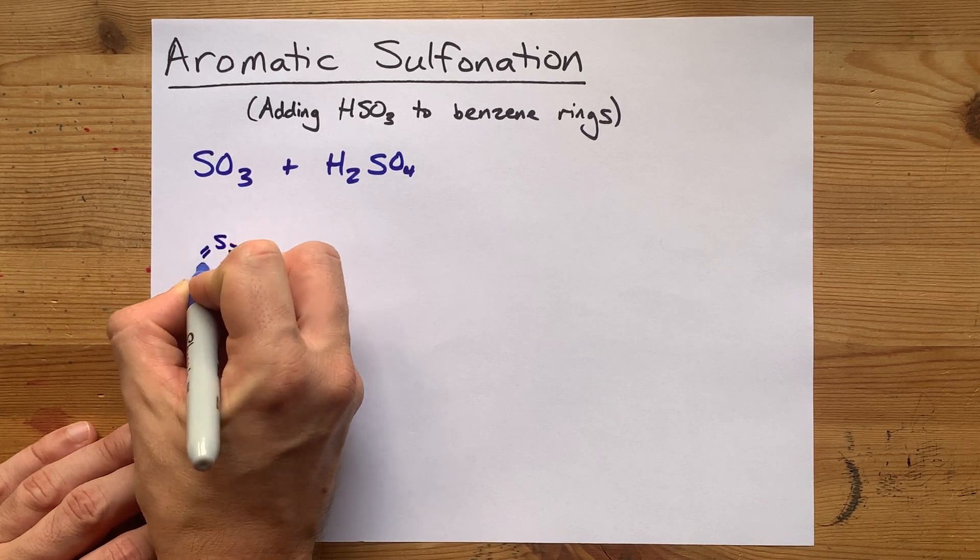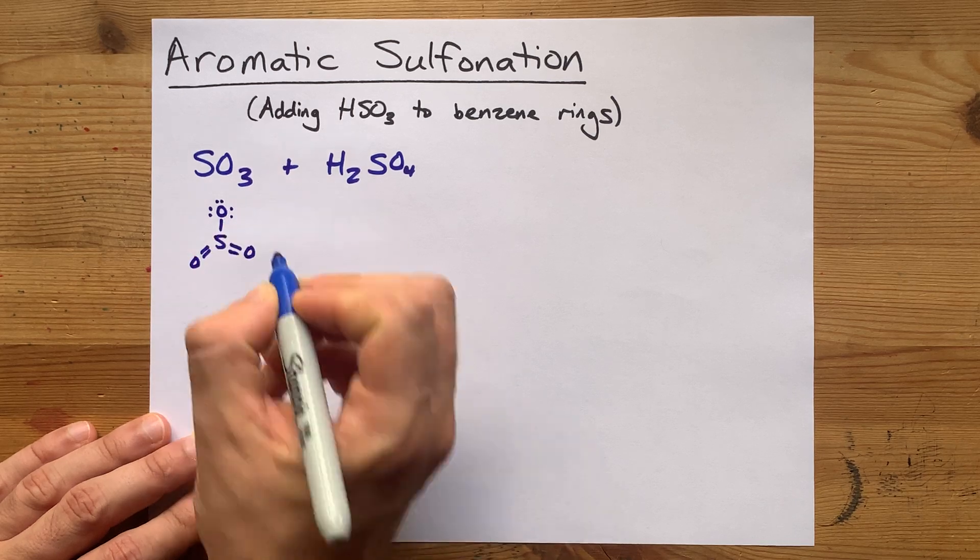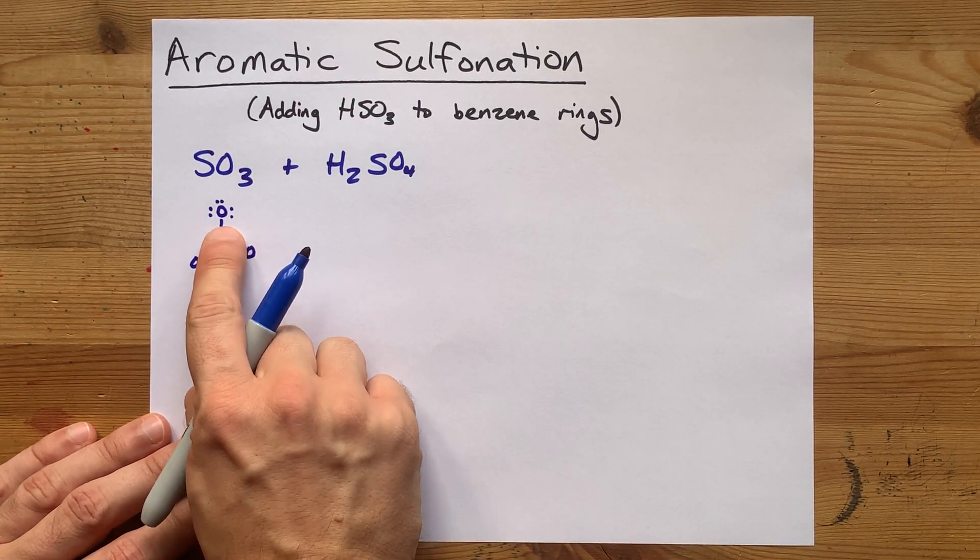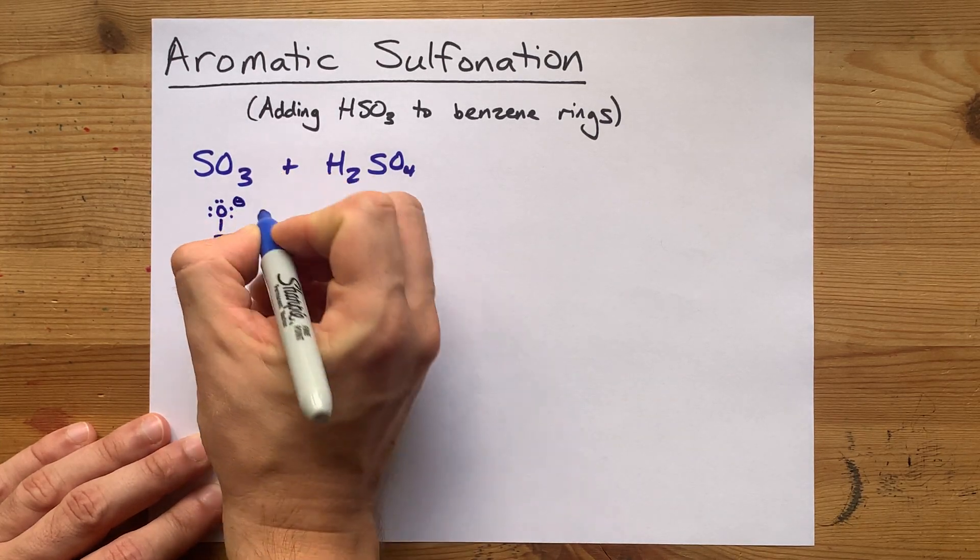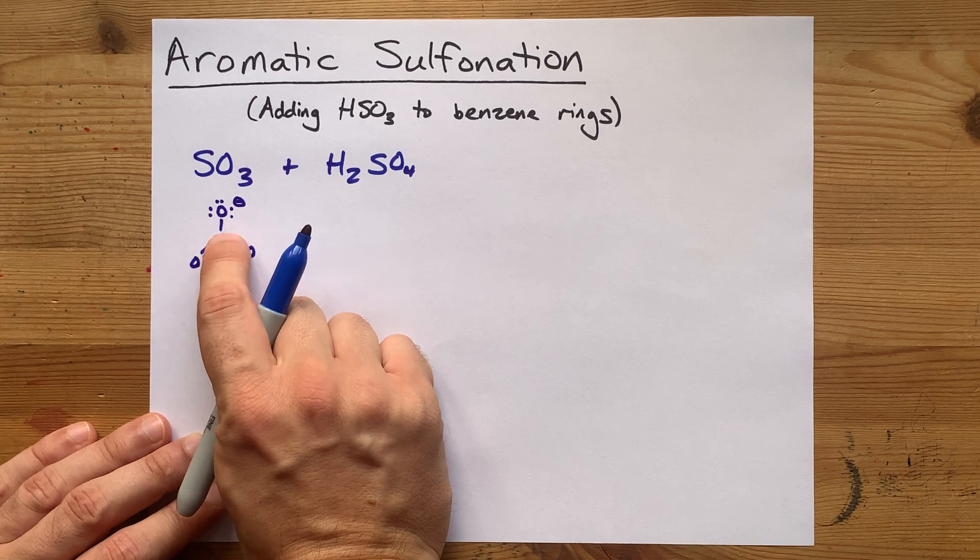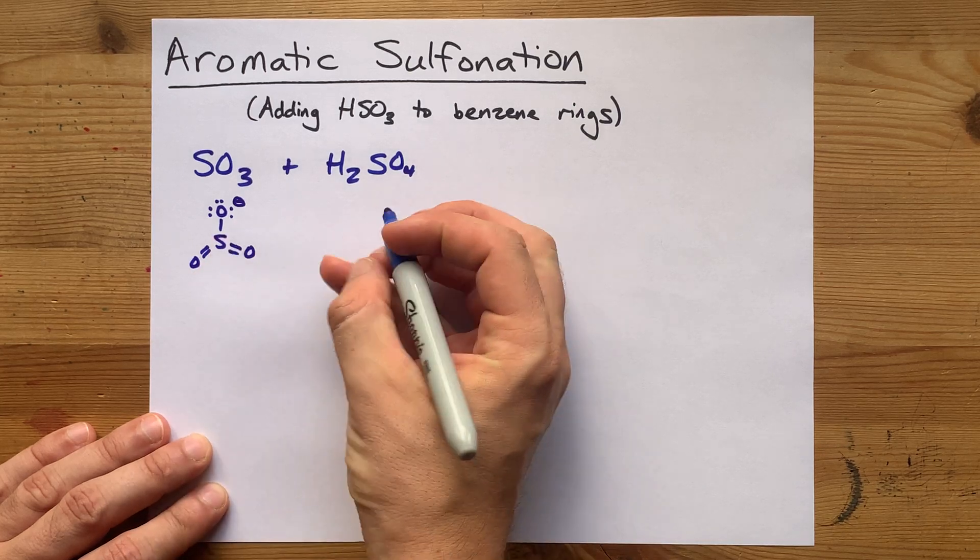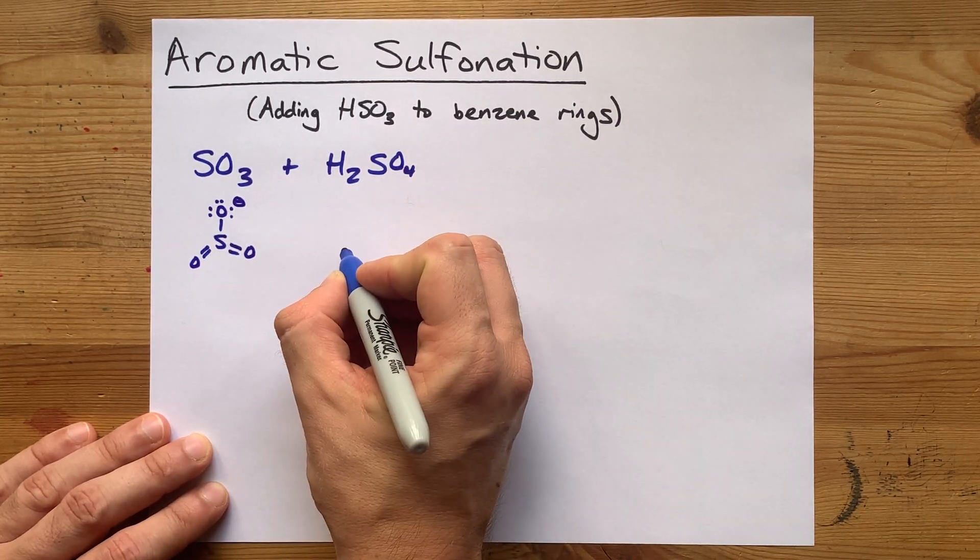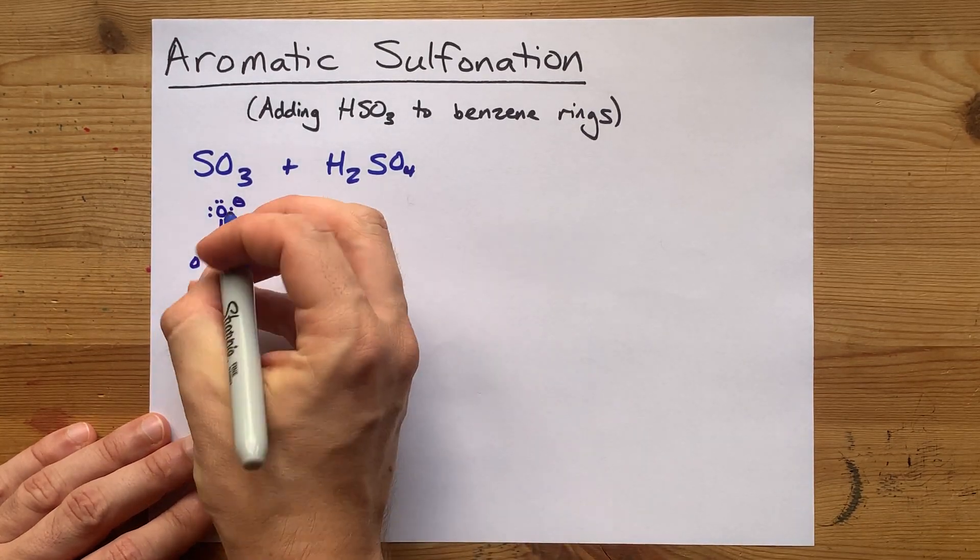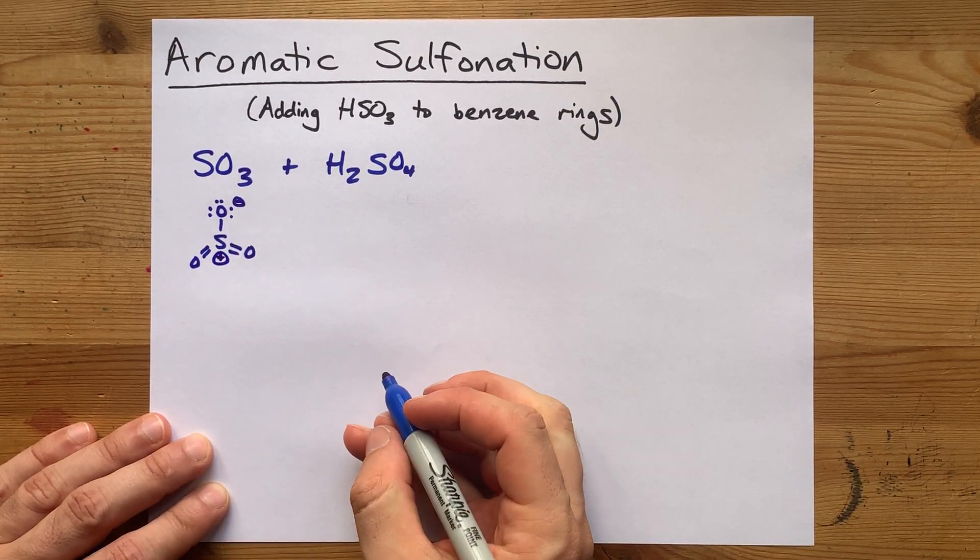There are many good resonance structures for sulfur trioxide. The one we'd like to think about right now has two double bonded oxygens and one single bonded oxygen. We show it this way to indicate there can be slightly negative charge density on any of the oxygens. From H2SO4, one of the H's can attach to that particular oxygen. I should also note there's a positive formal charge on the sulfur here.